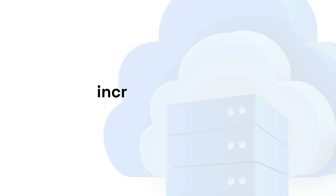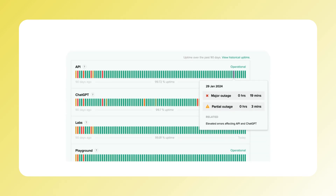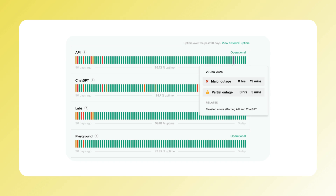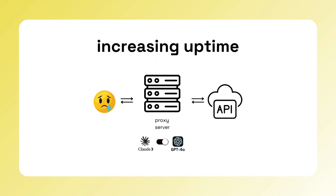Fifth, increasing uptime. With the global shortage of GPUs, AI services can fail or throttle requests. Relying on a single vendor can be risky. LLM gateways allow you to define a fallback strategy, switching to an alternative or changing regions if needed.